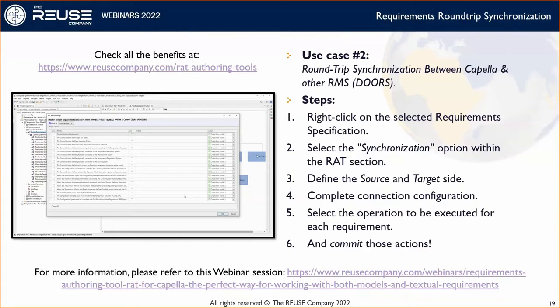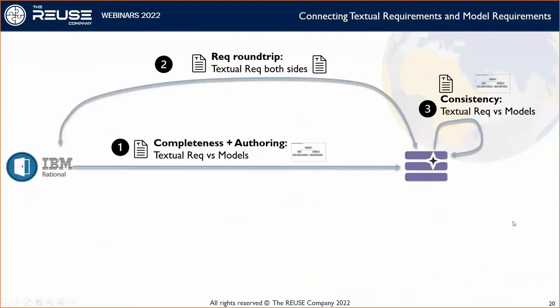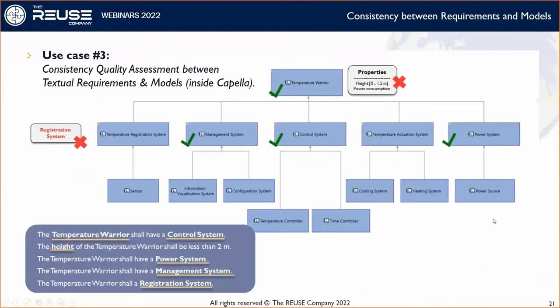The next part is assessing consistency. We are now inside Capella and will assess the consistency between the requirements we just brought in and the models already inside the tool. This consistency evaluation checks whether we have an incorrect property defined — for example, a set of specification requirements with a property attribute value that shows a problem. We need to evaluate the consistency and provide a warning so that we can fix the issue. The same occurs when we have an additional component or subsystem inside the PBS.